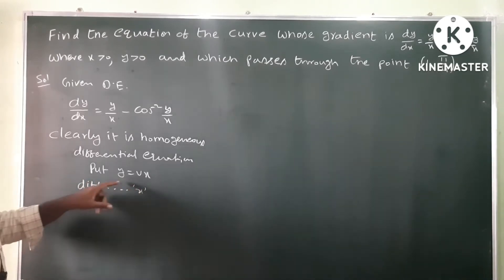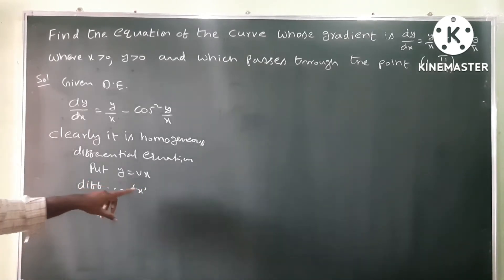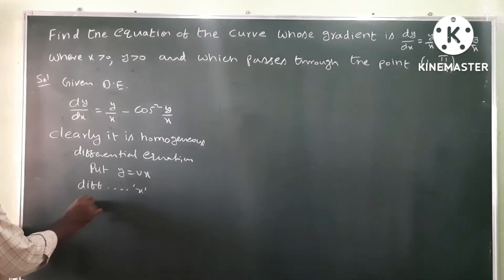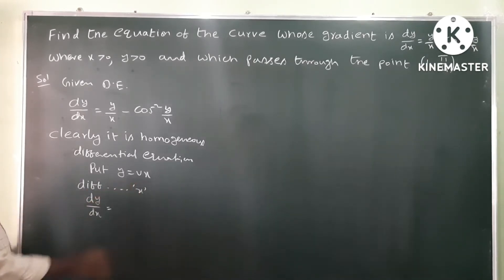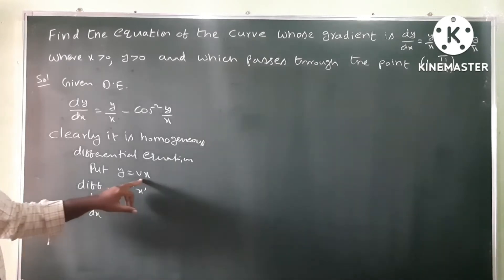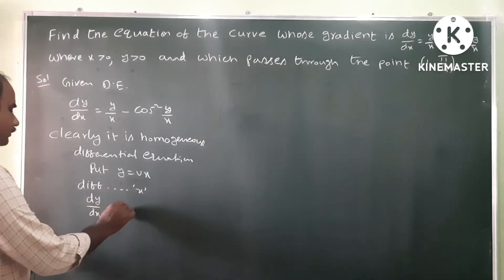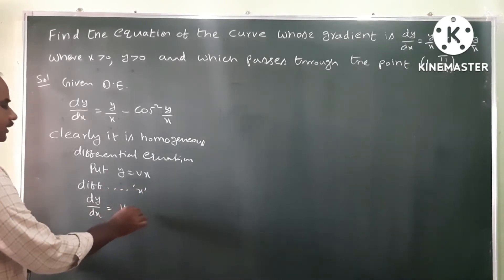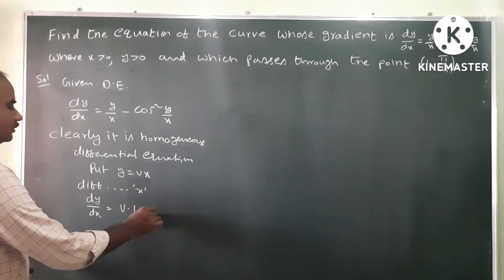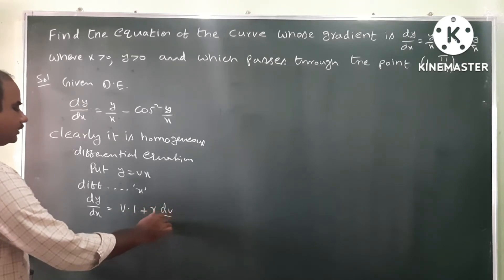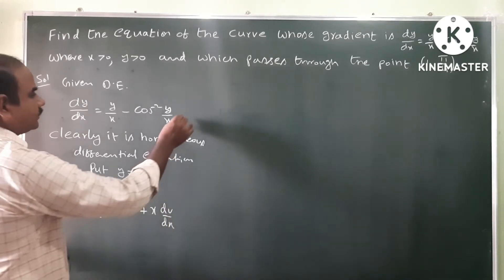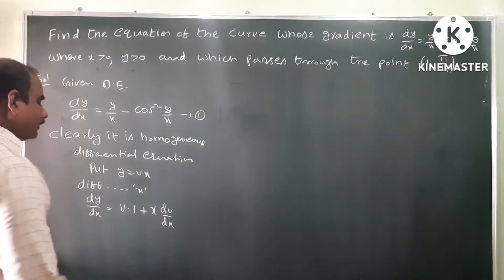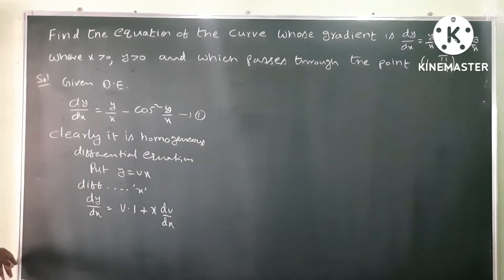The derivative dy by dx: since y equals vx, apply the UV rule. So dy by dx equals v into derivative of x plus x into derivative of v, giving dy by dx equals v plus x dv by dx.